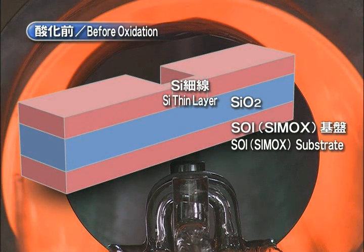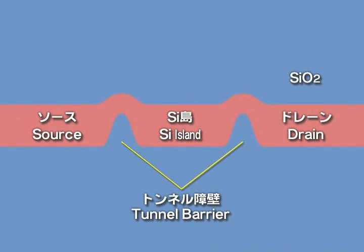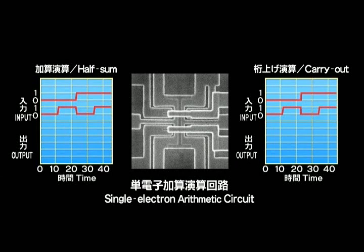The thin silicon lines that have been patterned on the substrate by lithography are oxidized to create what is referred to as the tunnel barrier. In this way, a silicon island containing approximately ten atoms on one side is formed. For the first time in the world, NTT has produced and verified prototypes of arithmetic circuits that incorporate this single electron transistor.